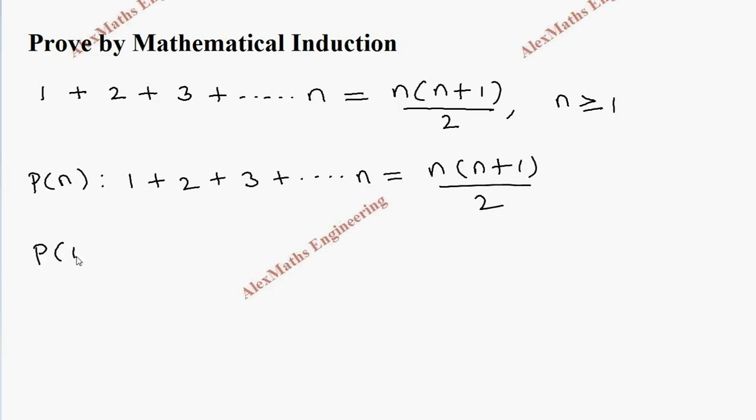Let's take P(1). For the left-hand side, the first term alone is 1, so LHS = 1. Coming to the right-hand side, we substitute n = 1 in the expression, so this becomes 1(1+1)/2, which equals 1(2)/2 = 1.